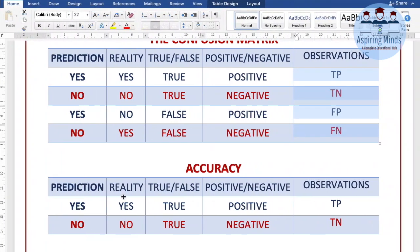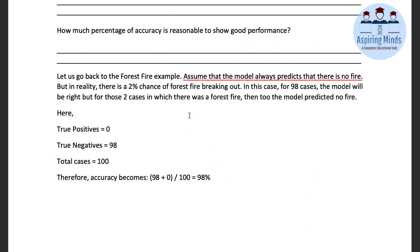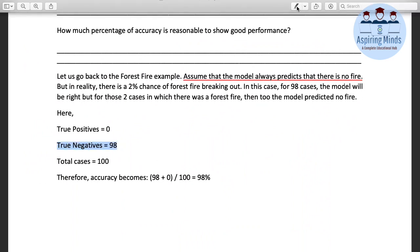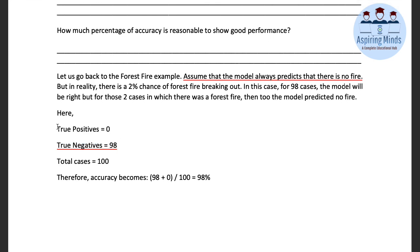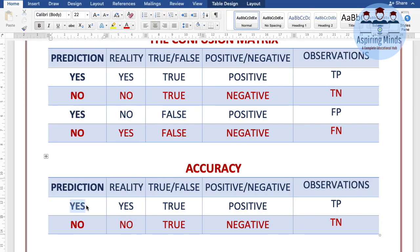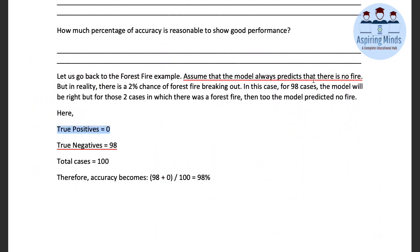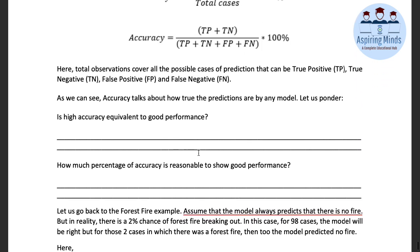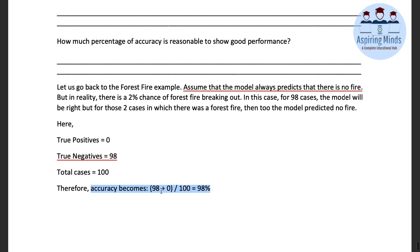The model predicted no fire, and in reality there was no fire — that is a true negative case. So true negatives are 98, since the model said no forest fire and there really was no forest fire. For true positive — where it predicted yes and reality was also yes — since the model always predicts no fire, true positive becomes zero. So accuracy = (0 + 98) / 100 = 98% accuracy.